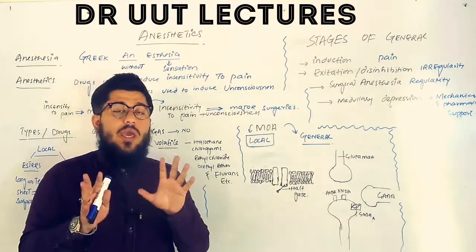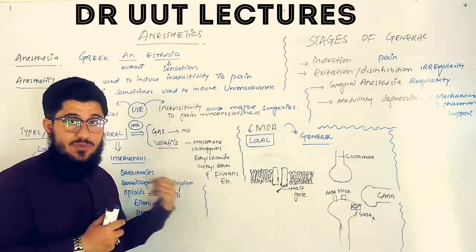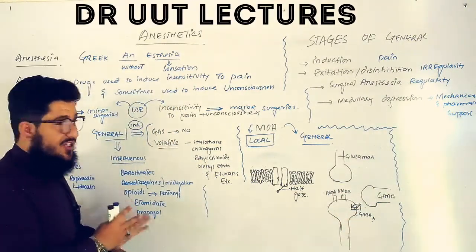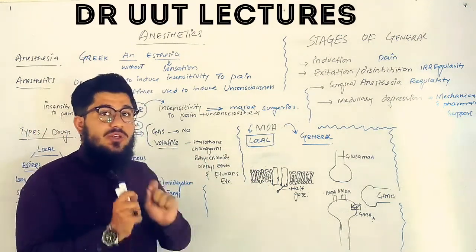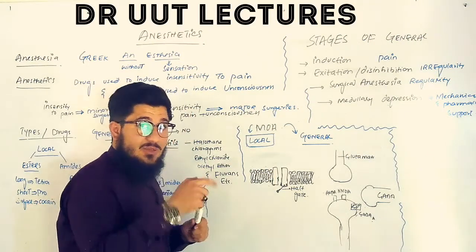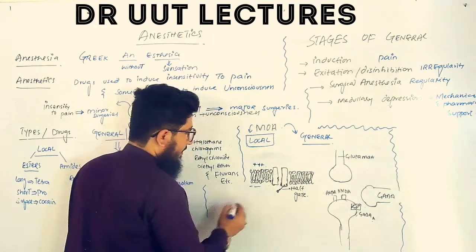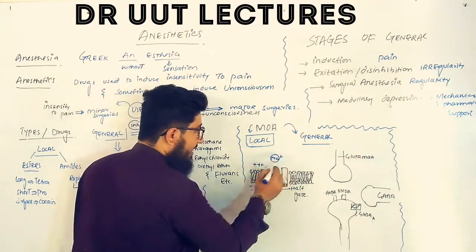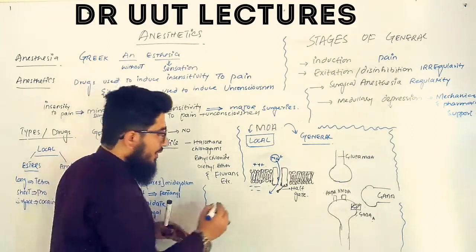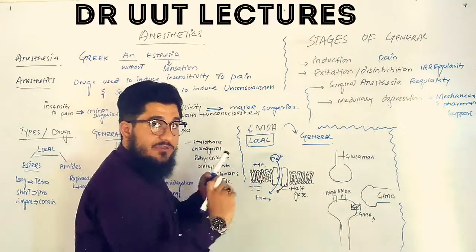Regarding mechanism, there is no single well-known mechanism, but two main mechanisms are placed in textbooks. For local anesthetics — normally when a stimulus is given to local cells, the outside is positive and inside is negative. The cell receives the stimulus, sodium starts moving inside (sodium influx), and inside gradually becomes positive.